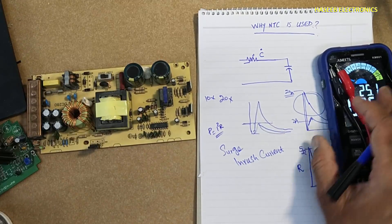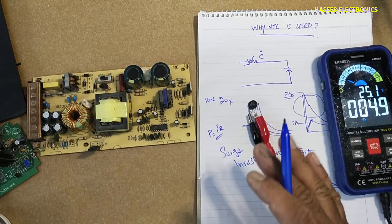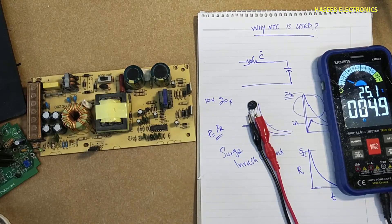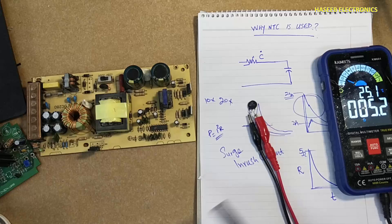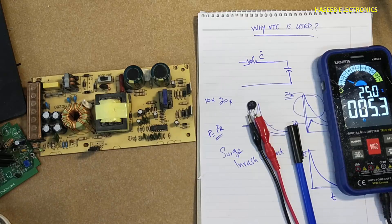So NTC is used to protect the circuit from surge current. I hope you enjoyed this video. If it is good, hit the like button. If you have any question, please write in the comments. Thanks for watching.